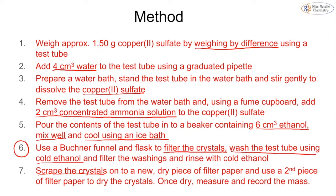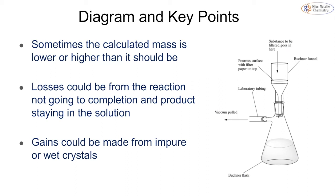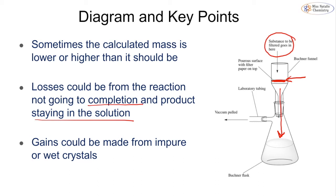Scrape the crystals onto a new piece of filter paper and use a second piece to dry them. Once dry, measure and record the mass. The Buchner funnel diagram shows the substance placed on filter paper at the top; a vacuum pulls unwanted material through while the filtered product remains on top. The calculated mass may be higher or lower than expected — lower if the reaction is incomplete or product remains in solution; higher if the product is impure or the crystals haven't been fully dried and retain water of crystallization.